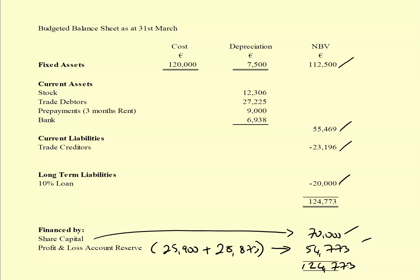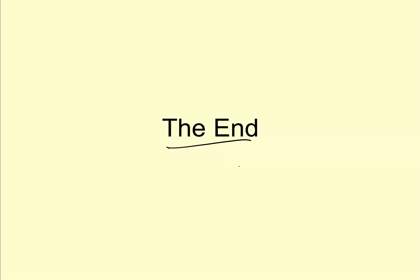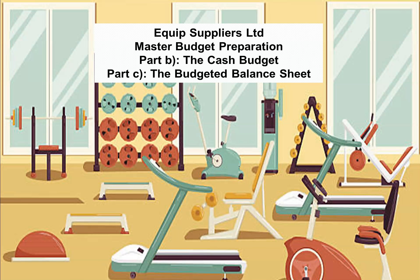Assets minus liabilities equals capital, confirming our projections balance correctly. That completes the tutorial - Part B the cash budget and Part C the budgeted balance sheet for Equip Suppliers Limited. Part A the income statement is covered in a previous video tutorial.